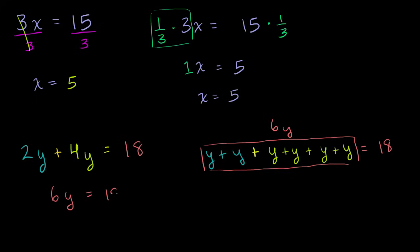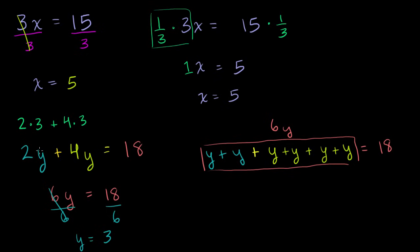That is going to be equal to 18. If I have 6 times something equal to 18, I divide both sides of this equation by 6. We are left with y is equal to 3. You can always check: 2 times 3 plus 4 times 3 — that's 6 plus 12 — is indeed equal to 18. So it works out.